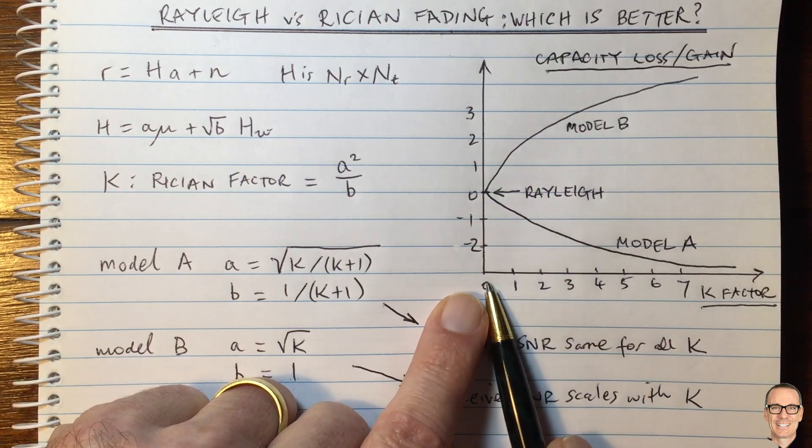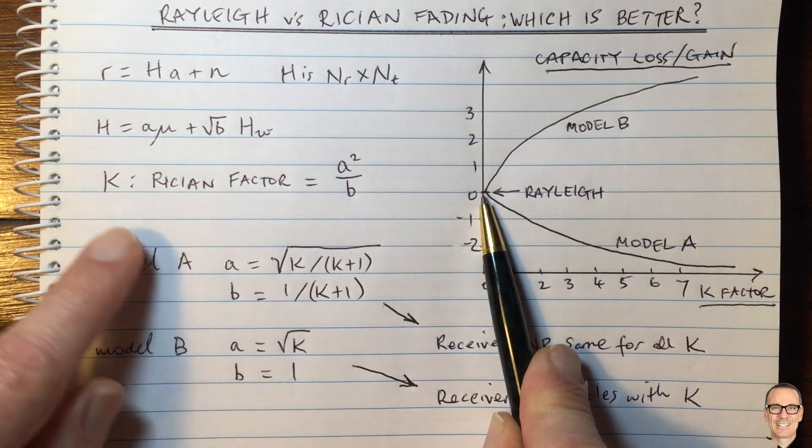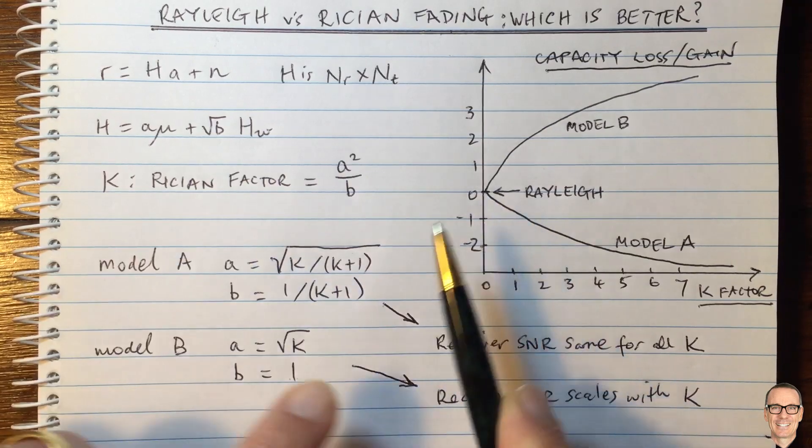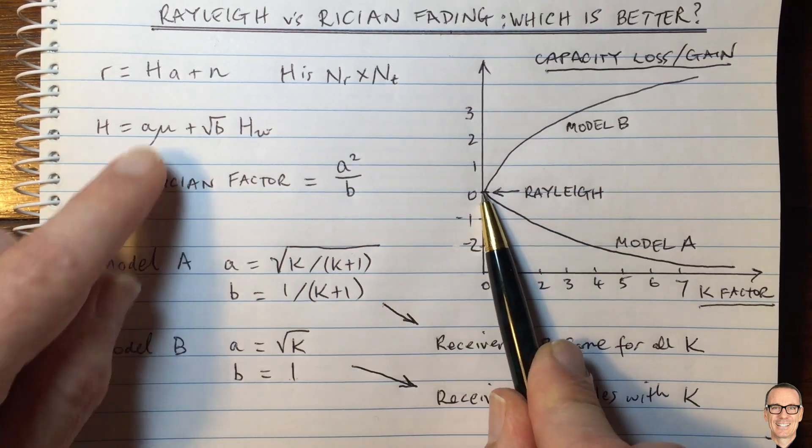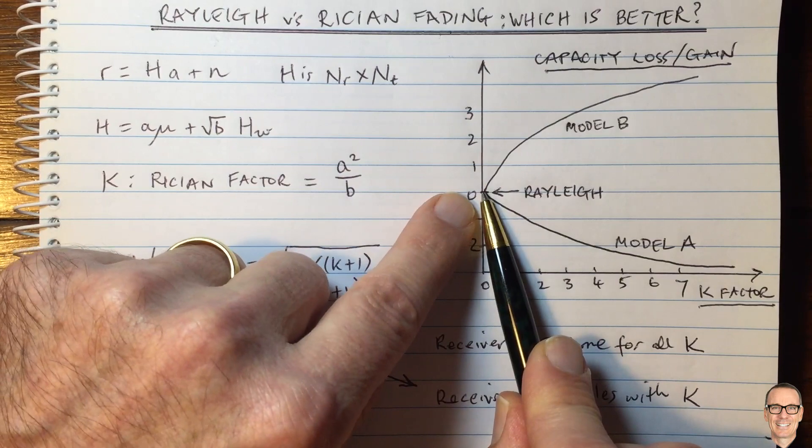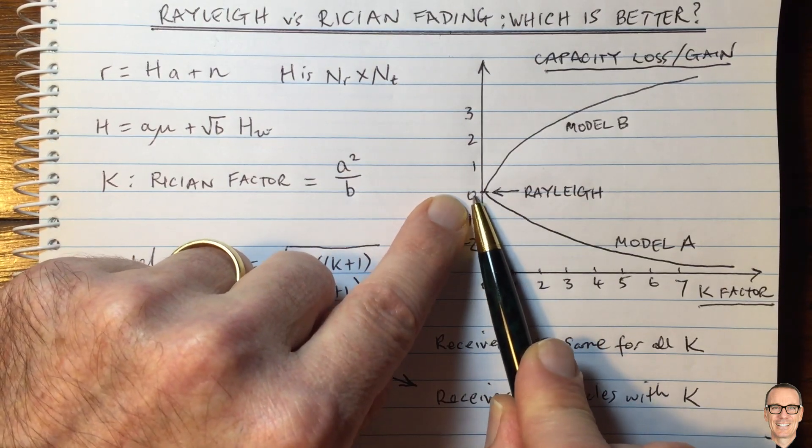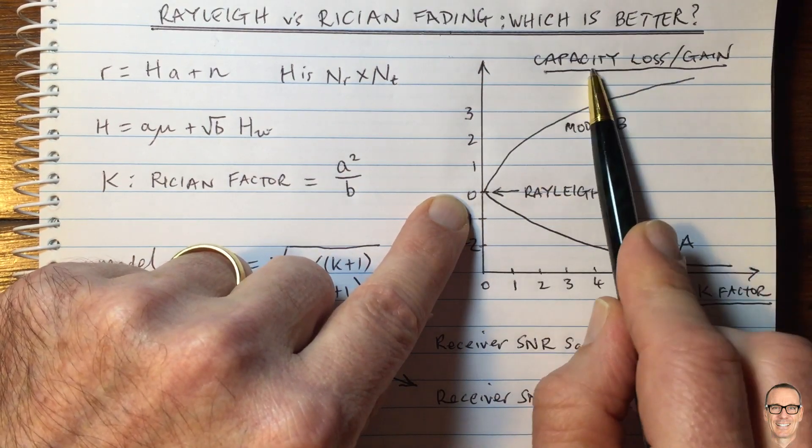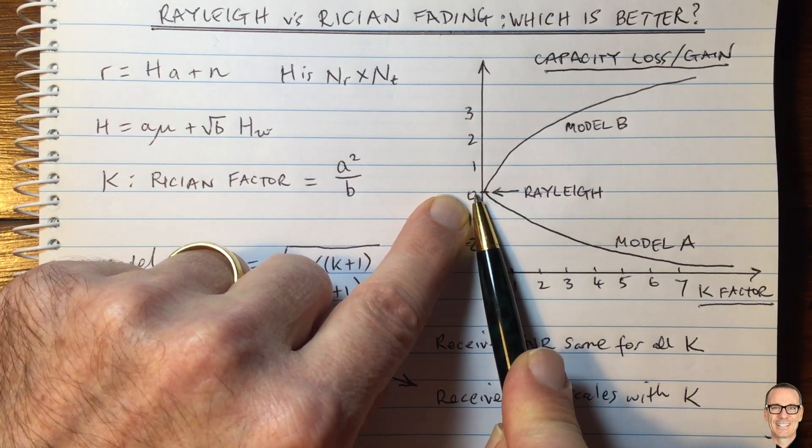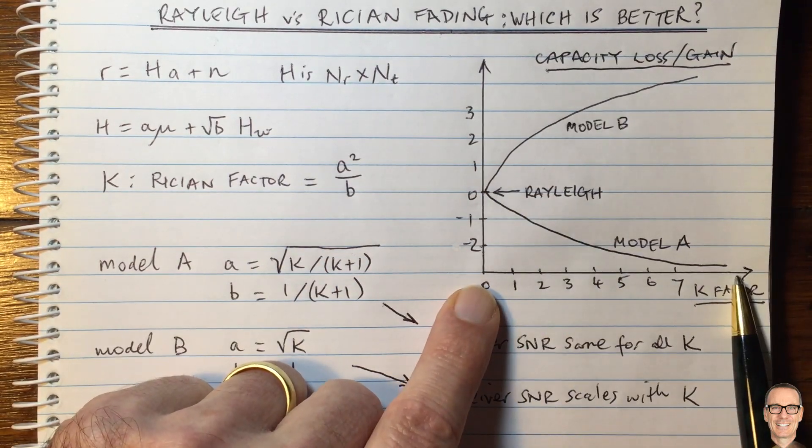And here, when K factor equals zero, we have the Rayleigh scenario. So when K factor equals zero, there's no dominant path. There's just a Rayleigh result. And so we're normalizing that to be zero. And we're going to look at the capacity loss gain in comparison to that.